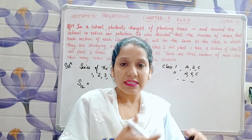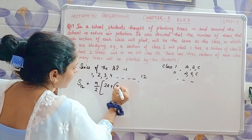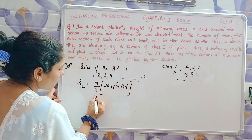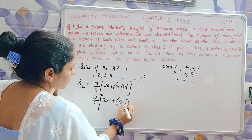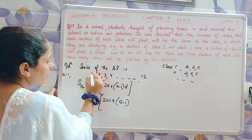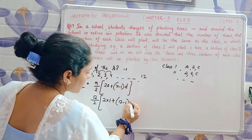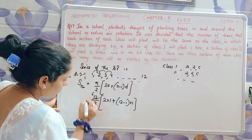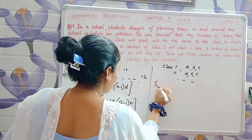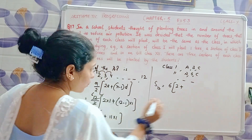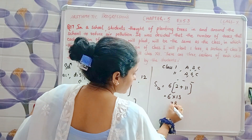To find the total, we apply the AP sum formula: S = N/2 × (2A + (N−1)D). Here N = 12, A = 1 (first term), and D = 1 (common difference, since 2 − 1 = 1). So S12 = 12/2 × (2×1 + (12−1)×1) = 6 × (2 + 11) = 6 × 13 = 78.